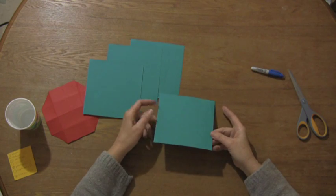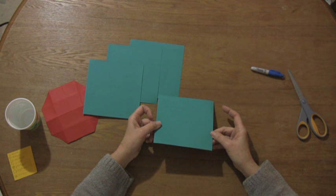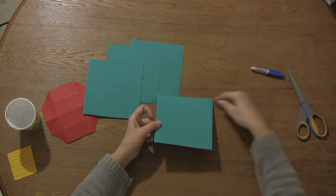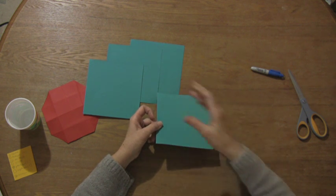So obviously a square is a square sheet of paper. If you don't have one, you could take and measure it with a ruler and make sure all sides are equal.